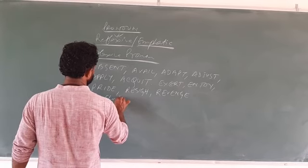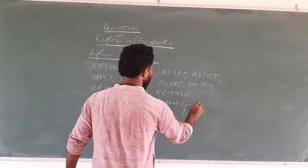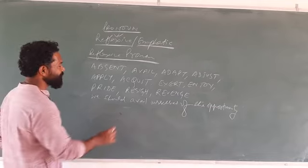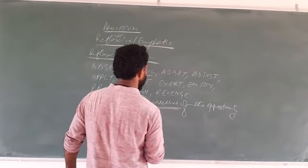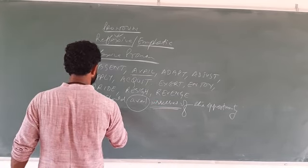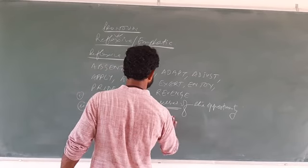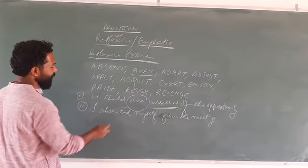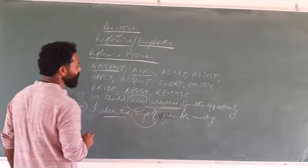Example: 'We should avail ourselves of the opportunity.' Here the word 'avail' is in the list, and that's why we use the reflexive pronoun 'ourselves,' which acts as the object. Another example: 'I absented myself from the meeting.' Here 'absented' is in the list, so we use the reflexive pronoun 'myself,' which is the object.